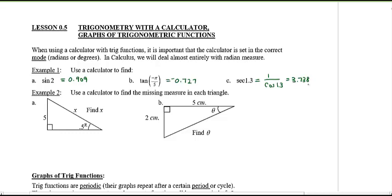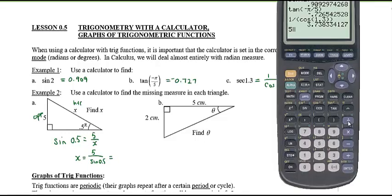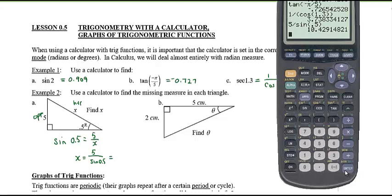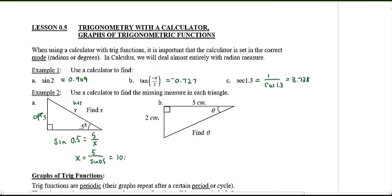Now, how can we use a calculator to find missing angle measures? Going back to SOH-CAH-TOA: the angle is 0.5 radians, and we have the opposite side and hypotenuse, so we use sine. Sine(0.5) equals opposite over hypotenuse, meaning x equals 5 divided by sine(0.5), which gives 10.429.